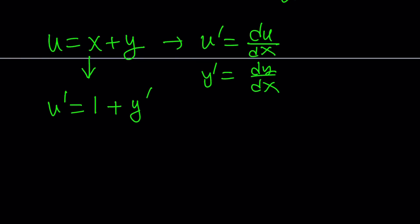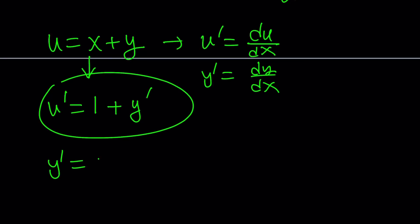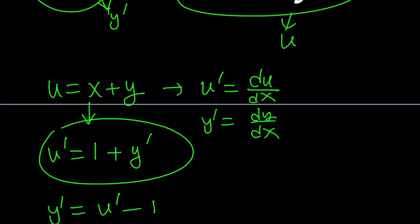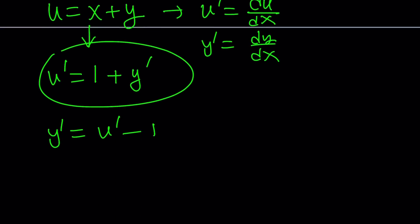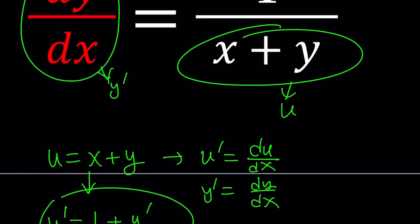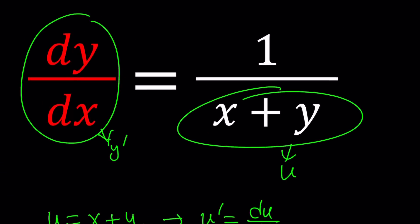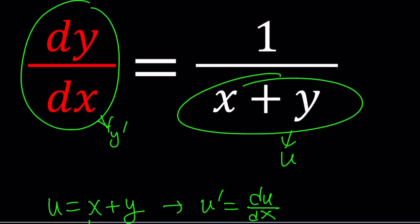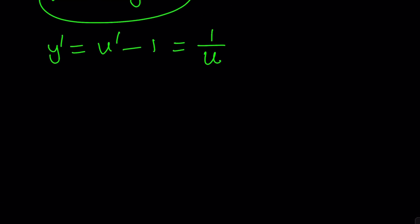From the differentiated expression we can isolate y prime and write it as u prime minus 1. That equals 1 over u. From here our goal is to isolate u prime and then use Leibniz notation to turn this into a separable equation. As it is, x and y are stuck together and we can't separate them — in order to separate, the expression needs to be a product.